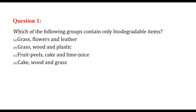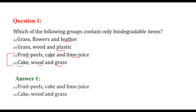The first question is: which of the following groups contain only biodegradable items? One option has plastic, another has leather — if leather is processed it is not biodegradable, but in natural form it is. The options with fruit peel, cake, lime juice, wood, and grass — C and D — are the correct answers, as they all contain biodegradable items.